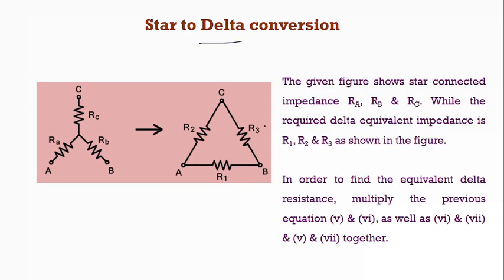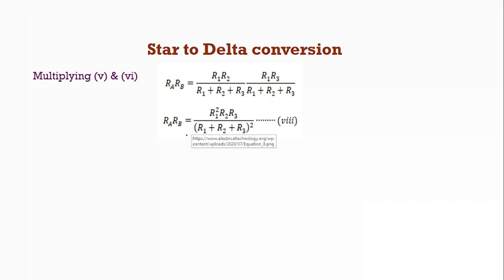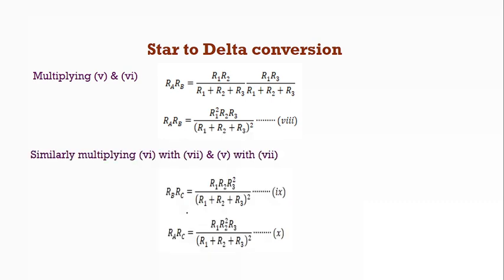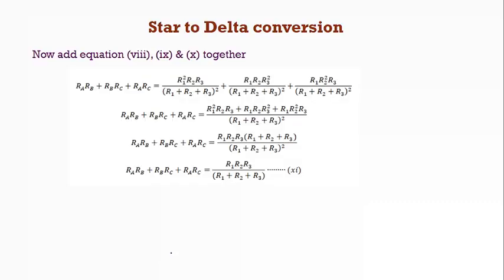Coming to the star to delta conversions. Already we have calculated the equations. Now, we are going to multiply equation 5 and 6, equation 6 and 7, equation 5 and 7. So that we will be calculating what is RA RB, RB RC and RC RA. Already we have found what is this.